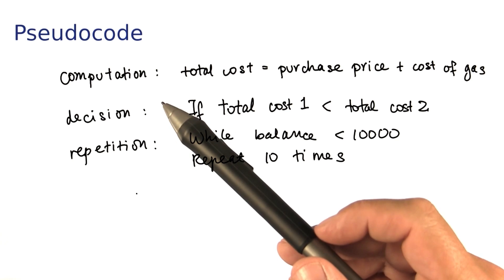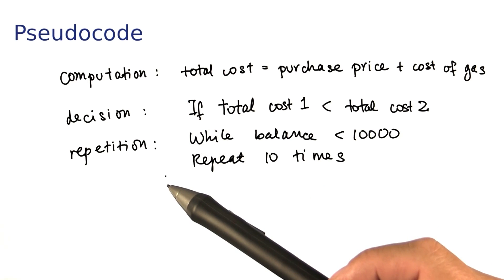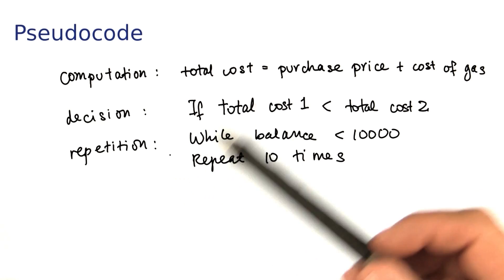Those are the three essential elements of pseudocode: computations or other actions, without any regard of the syntax of a particular programming language.